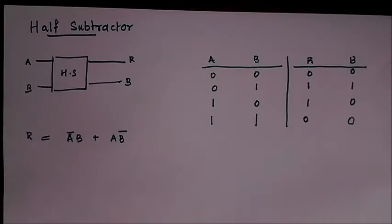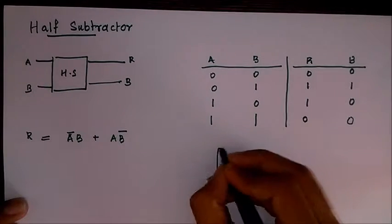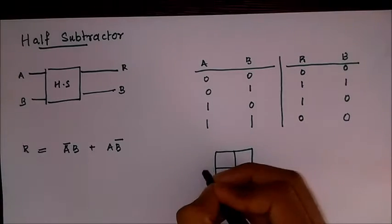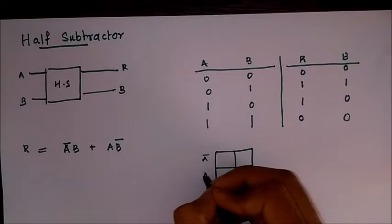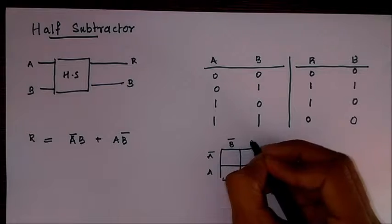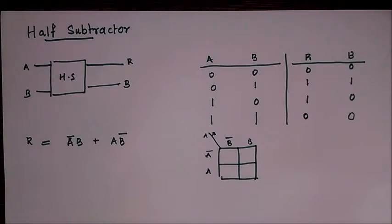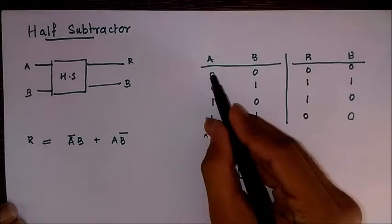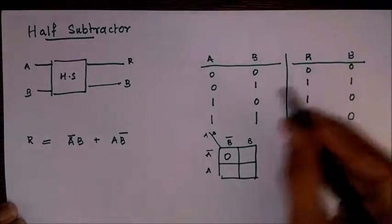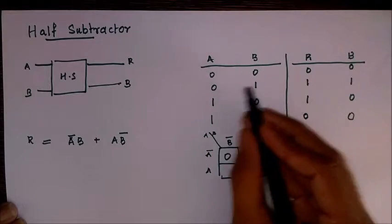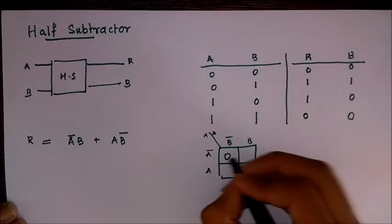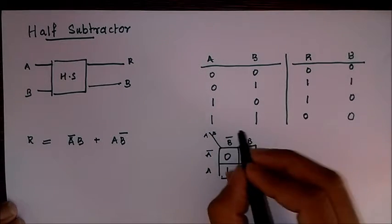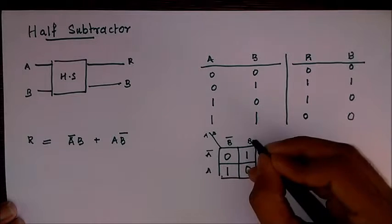When we draw the K-map, it will be A̅, A, B̅, B as the inputs. We have A̅B̅ is zero, and A̅B is one, A̅B is one, and AB̅ is also one, and AB is zero. So A̅B and AB̅, A̅B + AB̅ will be our difference.